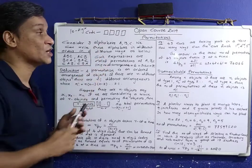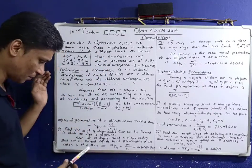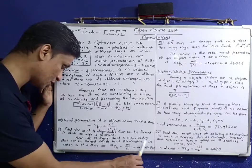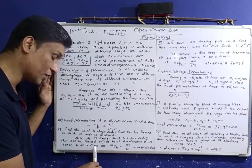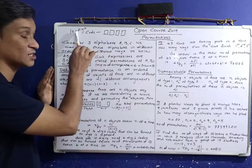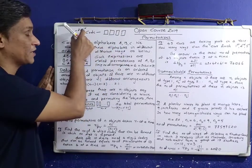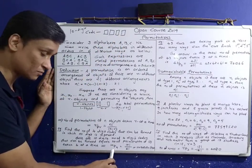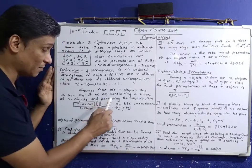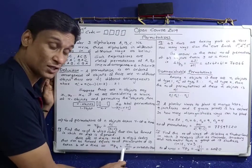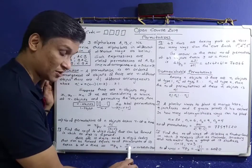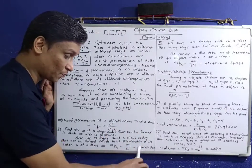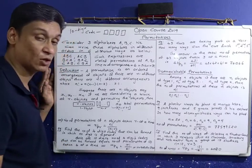Number of permutations of 10 objects taken 4 at a time. Number of four-digit codes equals number of permutations of 10 digits taken 4 at a time. That is 10P4, which equals 10 factorial divided by 10 minus 4 factorial, that is 6 factorial. That is 10 into 9 into 8 into 7 into 6 factorial divided by 6 factorial. The answer is 5040.